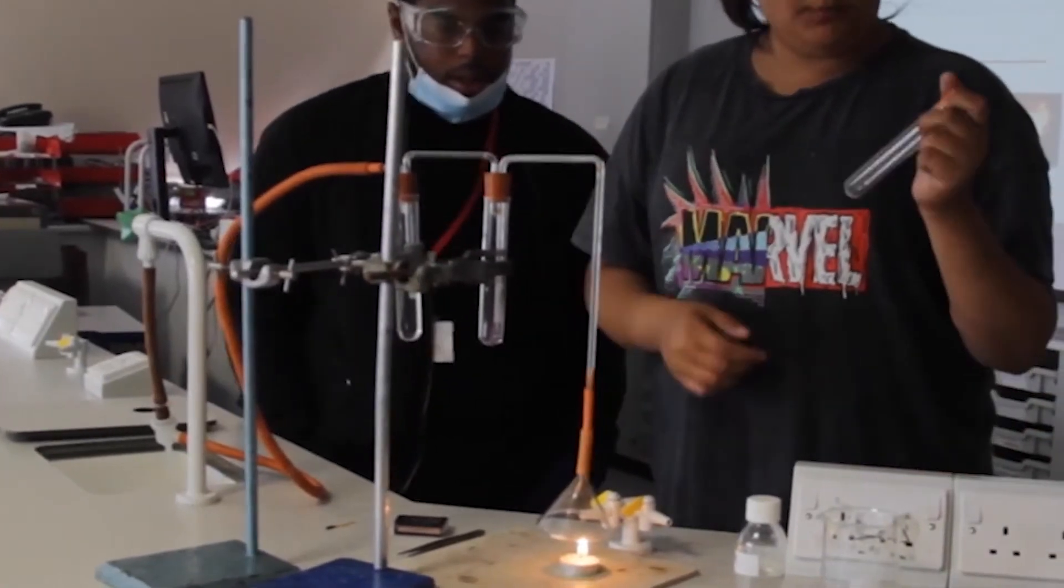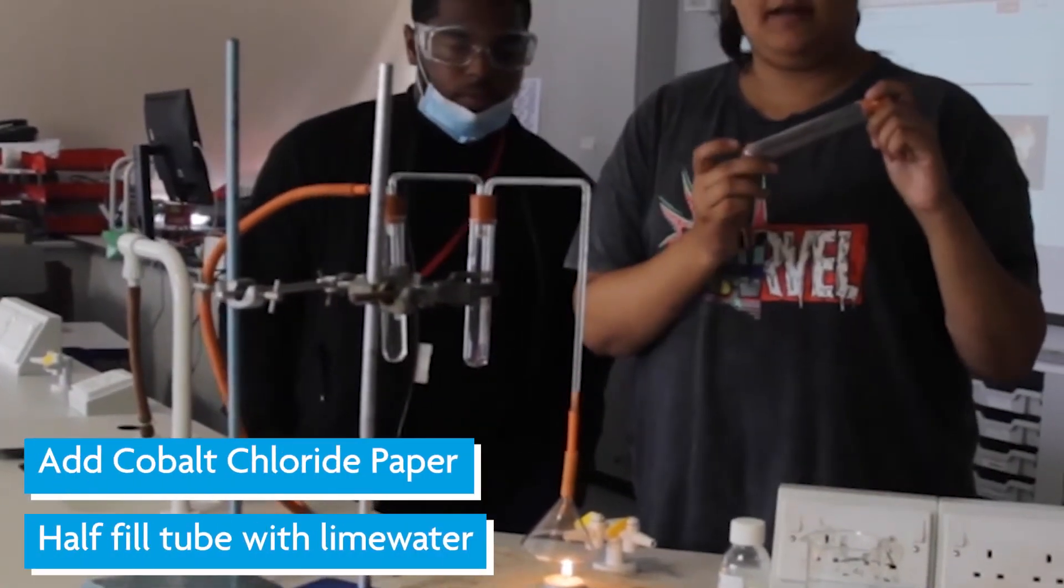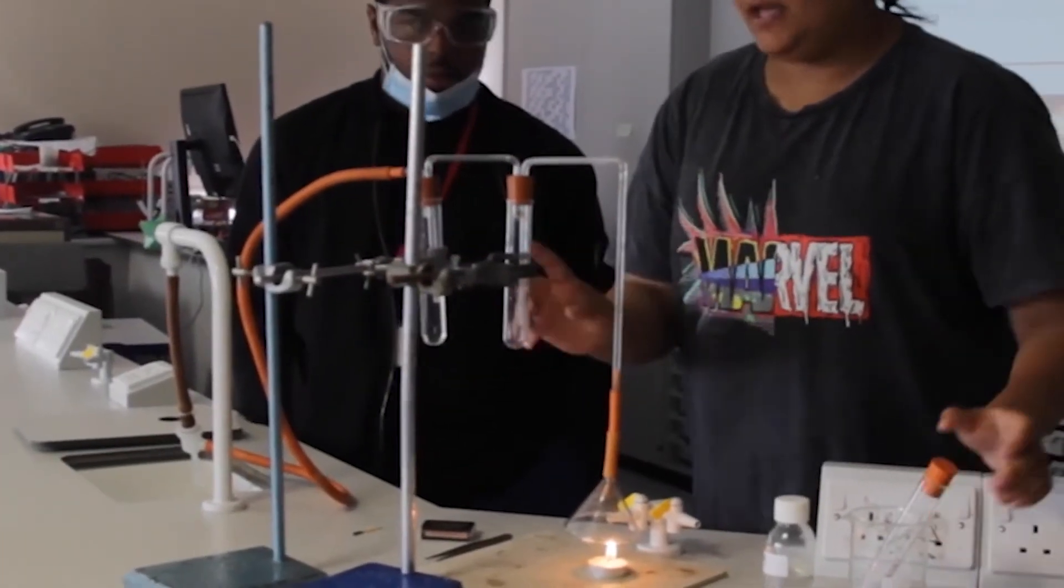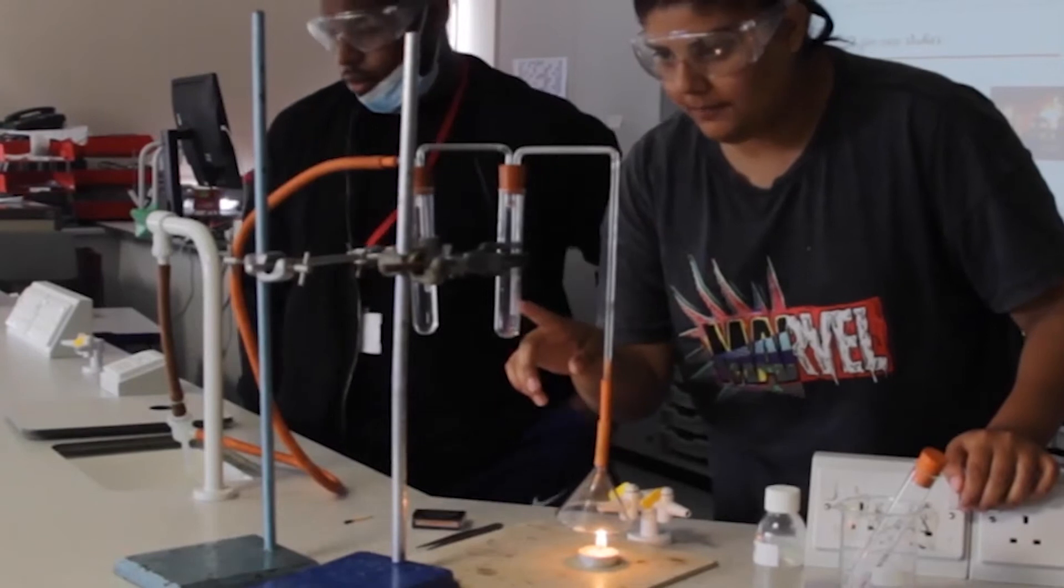To find that we are going to use cobalt chloride paper as you can see over here, which is purple. To investigate if water is present, over here you can see there is cobalt chloride paper in the tube.